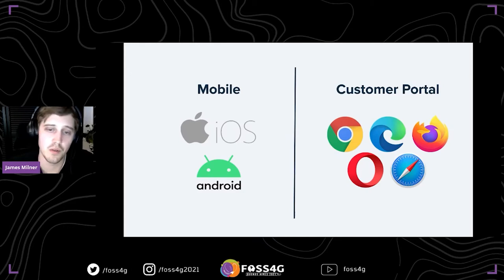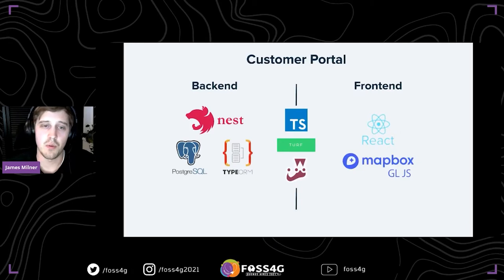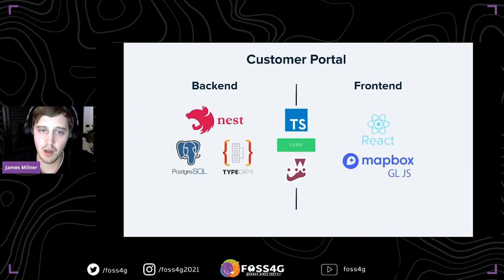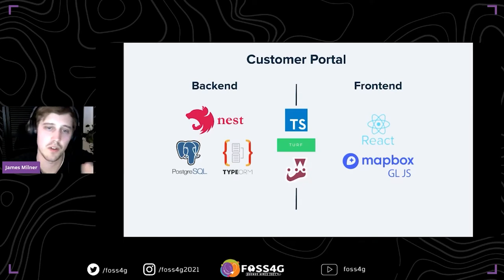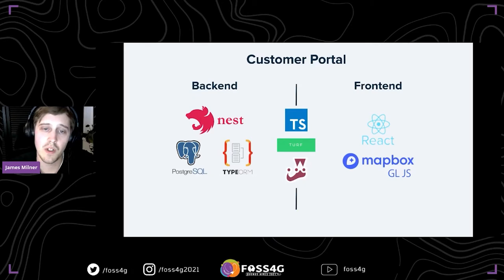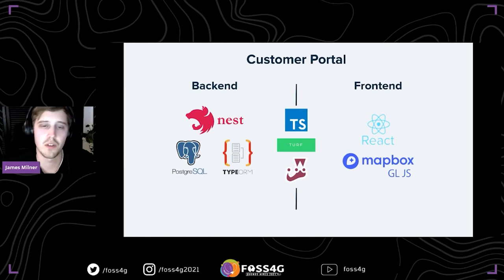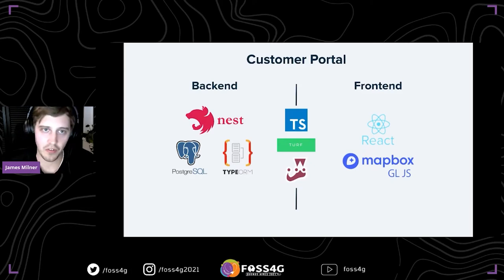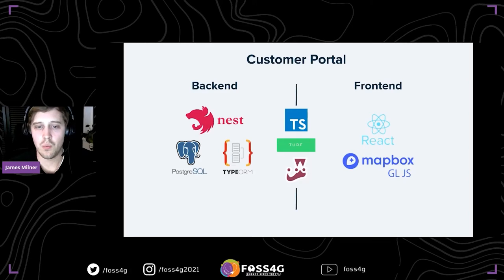That customer portal is where I spend a lot of my time and it powers all of our mobile experiences. We're on iOS at the moment and hoping to be on Android soon. The customer portal is all written in JavaScript, or more specifically TypeScript. On the back end is Node with Postgres, and on the front end we're using React, and most relevant to this talk is MapboxGL. Across both front end and back end we're using Turf, which is partly why I'm getting so heavily involved with Turf. And then also Jest, which is another important point for the context of this talk — Jest is a very popular JavaScript testing framework, and most of the examples in this talk will be using Jest.